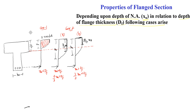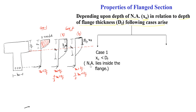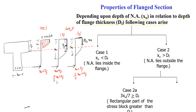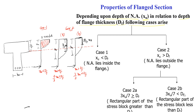To summarize: based on the depth of the neutral axis and the depth of the flange, there are two main cases. Case 1: xu < df — neutral axis lies inside the flange. Case 2: xu > df — neutral axis lies outside the flange. Case 2 is further divided into Case 2a where 3/7 × xu ≥ df (rectangular stress block depth exceeds flange depth) and Case 2b where 3/7 × xu < df (rectangular stress block depth is less than flange depth).